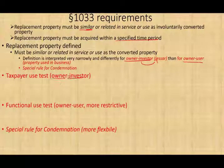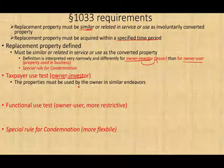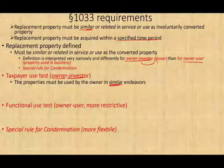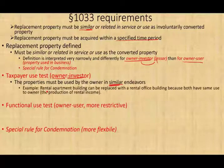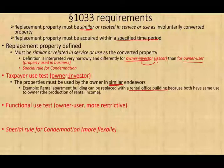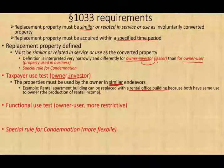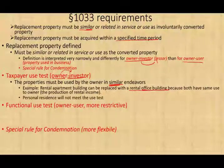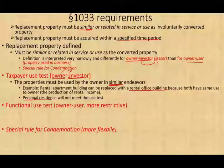If you are an owner-investor — meaning you hold rental property as a lessor — the replacement property must be used by the owner in a similar endeavor. For example, a rental apartment building that is destroyed can be replaced with a rental office building, because both have the same use to the owner: the production of rental income. However, you cannot take the money and invest it in a personal residence, as that is different from the owner-investor relationship.